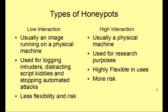There are two major types of honeypots: low or high interaction. A low interaction honeypot is usually a virtual image running on the machine. This allows the user to emulate a network of honeypots on a single computer. They usually have limited use and minimal risk, and are best for capturing script kiddies and automated attacks.